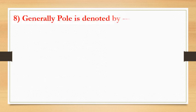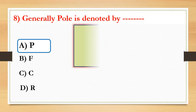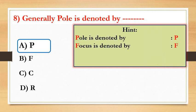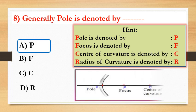Generally, the pole is represented by the symbol P. Option A: P, Option B: F, Option C: C, Option D: R. Answer is P. Pole is represented by P, focus by F, center of curvature by C, and radius of curvature by R.